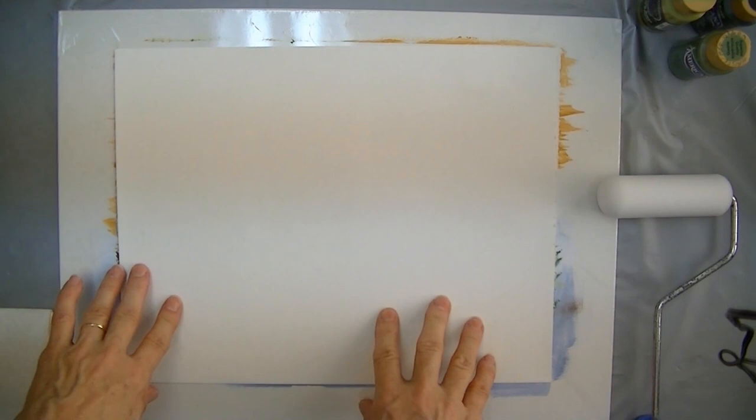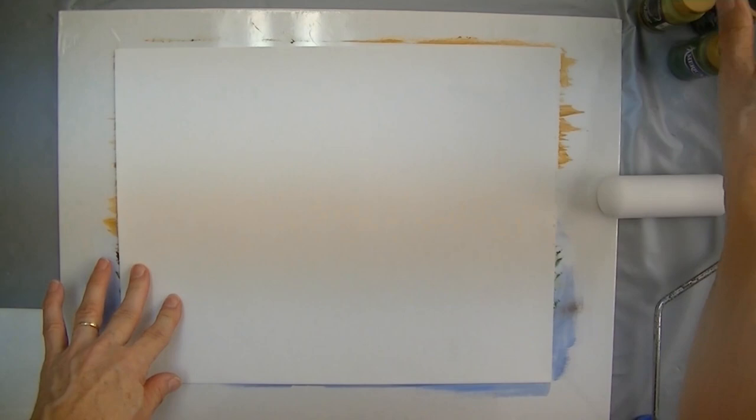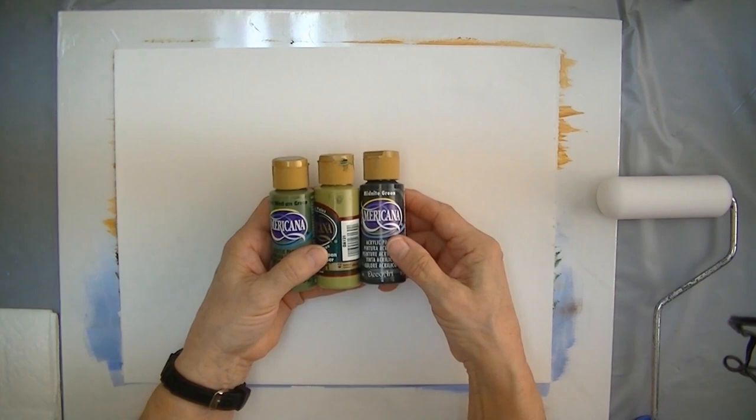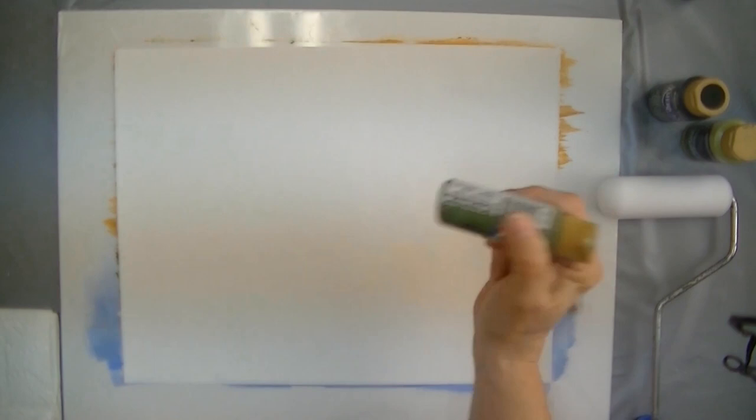I have just a practice sheet here. This is just a sheet of canvas paper and I thought we would do some greens. I have a medium value green, a light green, and a dark green. So we'll use these to create our background.